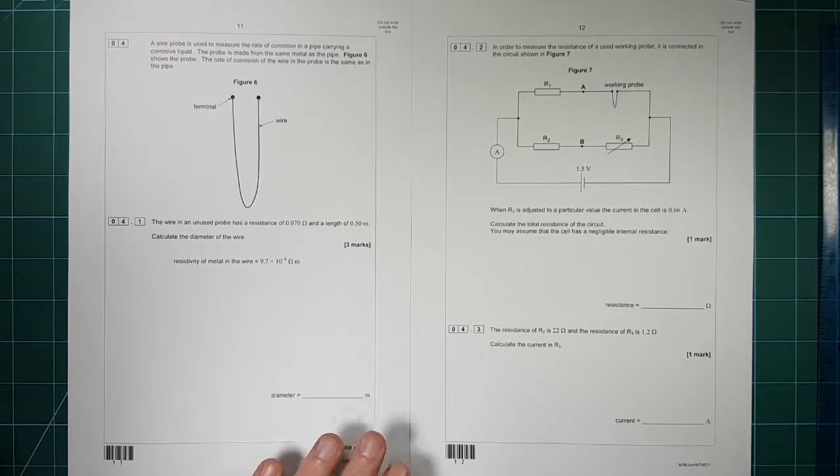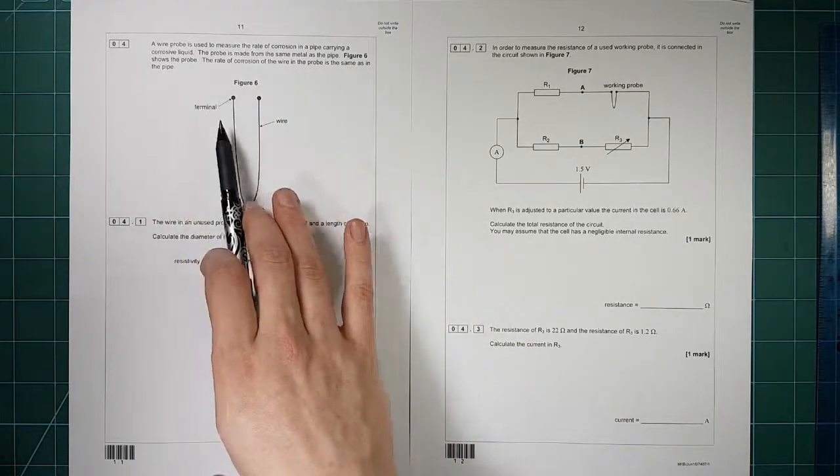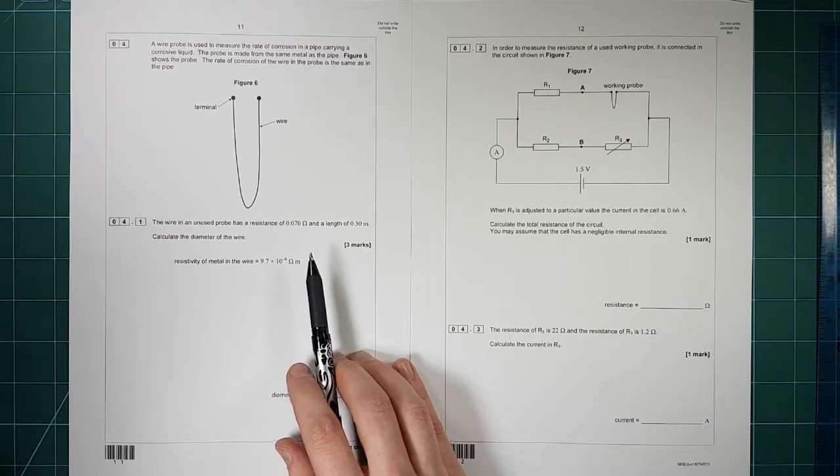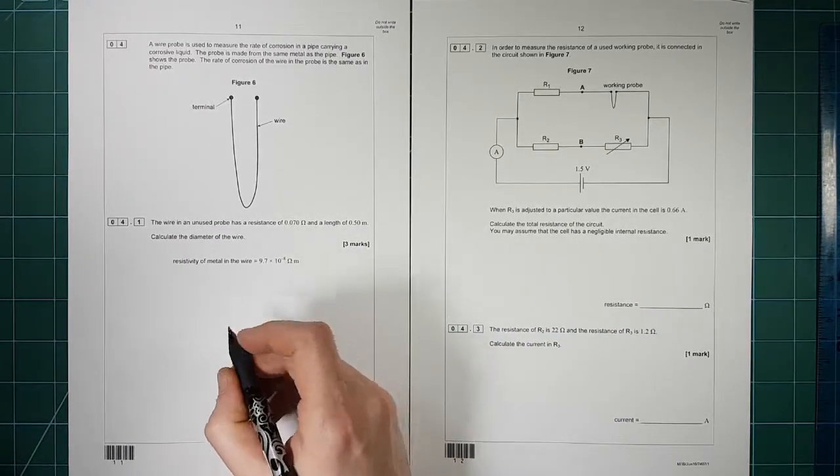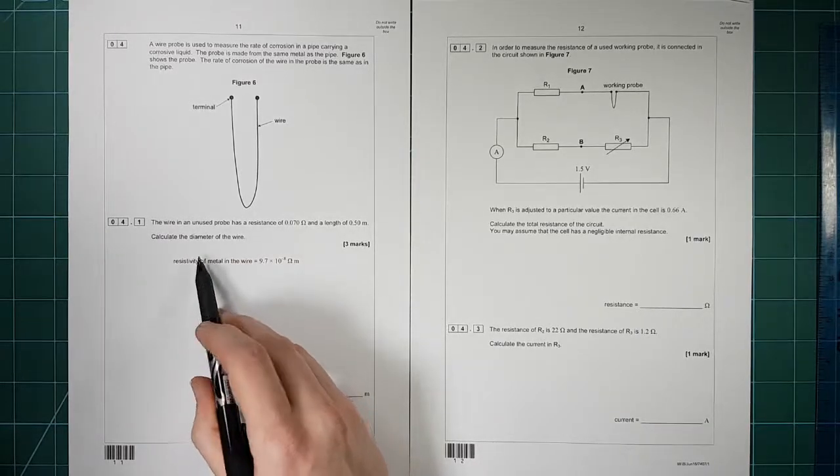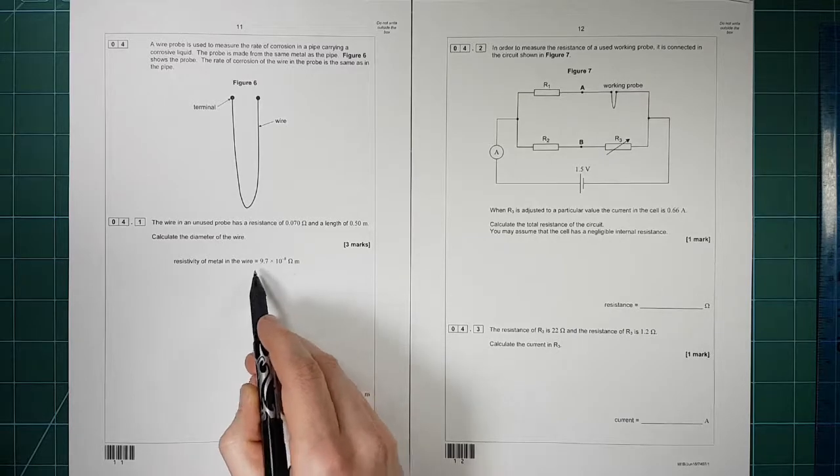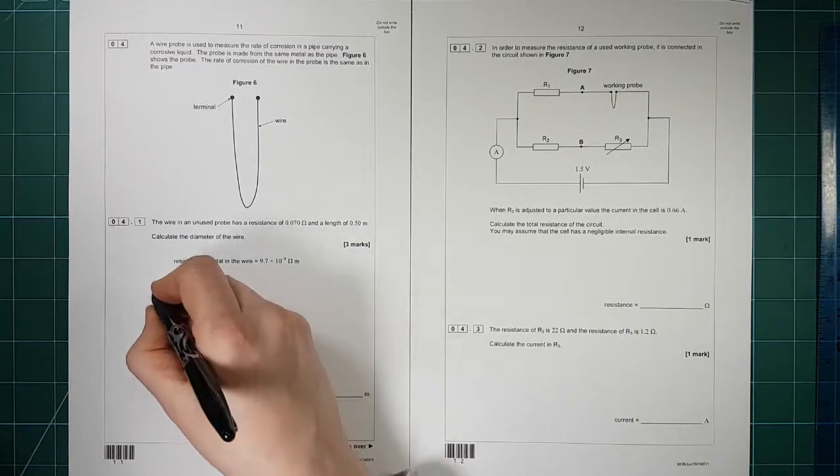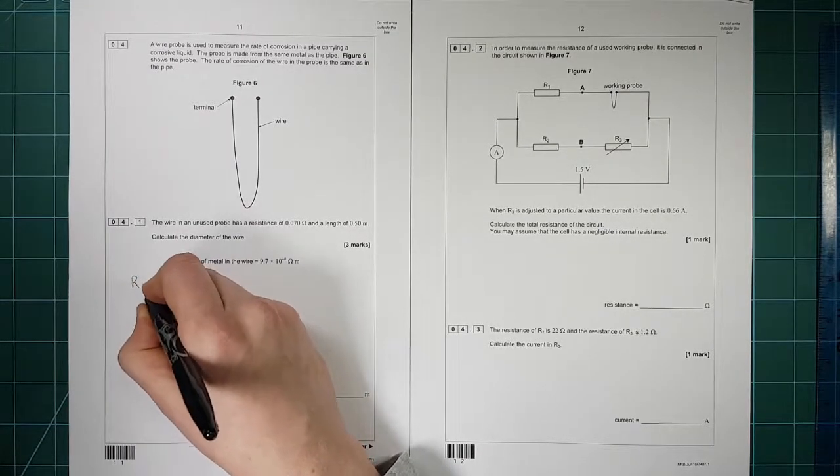Right, so question four now, this is the electricity question. We have a little bit of an introduction here with the wire and the terminals connected to it, but the question ultimately is just a basic electricity question. We first of all know the resistance of the wire, the length of the wire, and the resistivity of the metal, and we need to find the diameter of the wire. So firstly, we need the equation for resistivity.